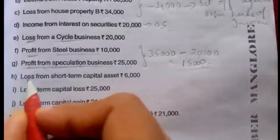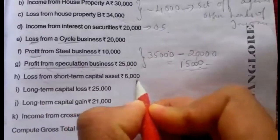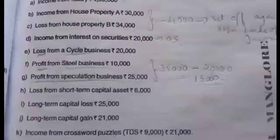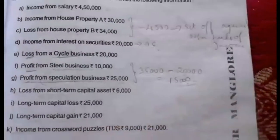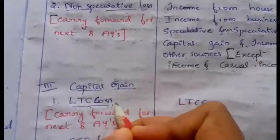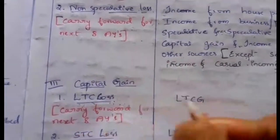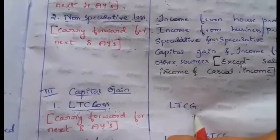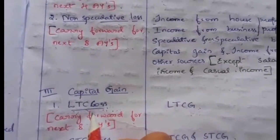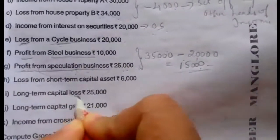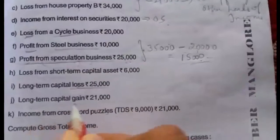Under the head capital gain, we have: loss from short-term capital asset Rs. 6,000, long-term capital loss Rs. 25,000, and long-term capital gain Rs. 21,000. First, we check the long-term capital loss. The long-term capital loss should be set off only against long-term capital gain. So, we first utilize the long-term capital gain to set off the long-term capital loss. We have both long-term capital loss as well as long-term capital gain.